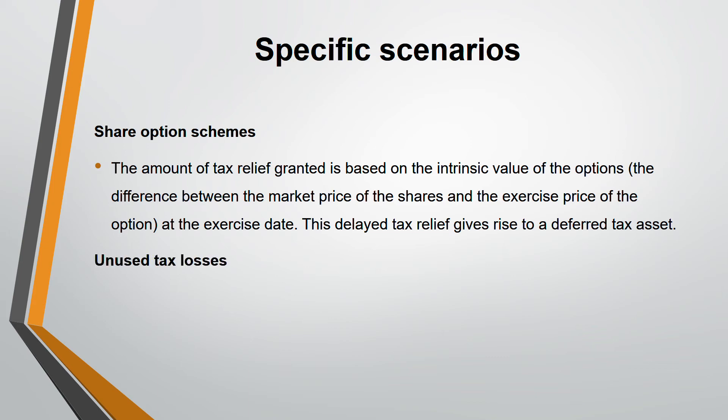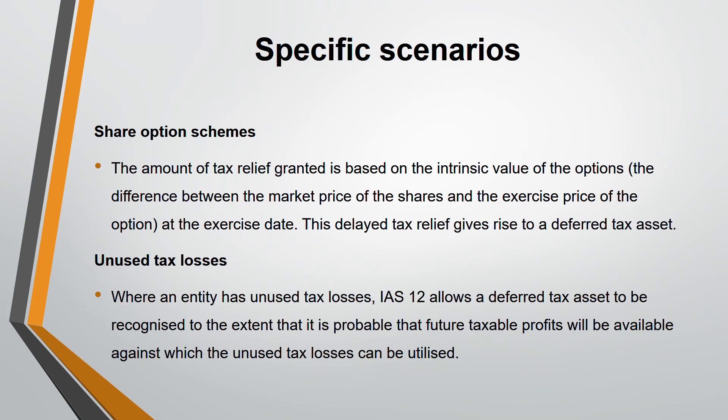Another very common scenario is unused tax losses — whether to recognize a deferred tax asset or not. When an entity has tax losses, IAS 12 says they can recognize a deferred tax asset, but only to the extent that they are confident of future taxable profit. For example, if you have tax losses of 10 million but no future taxable profit, you cannot recognize any deferred tax asset. If you have future taxable profit of 5 million, you can only recognize 5 million worth of deferred tax asset.